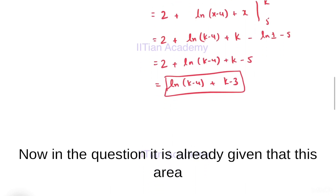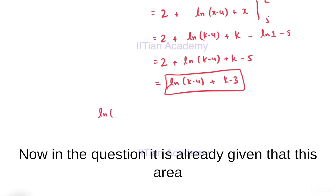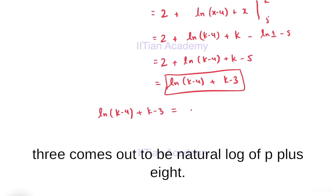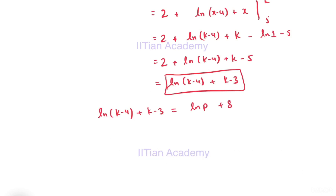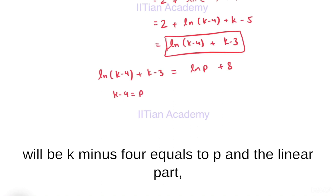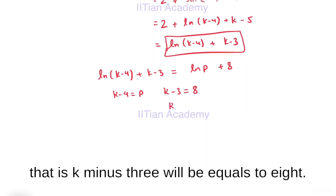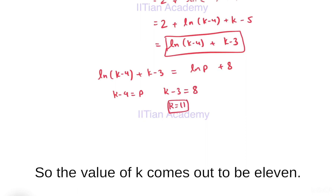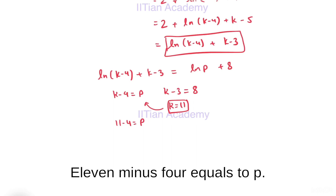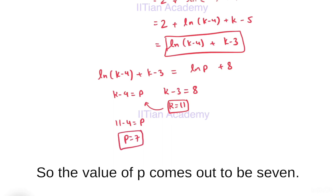In the question, it is already given that this area — ln(K-4) + K - 3 — equals ln(P) + 8. Comparing the argument of the natural log: K - 4 = P, and the linear part K - 3 = 8, so K = 11. Putting K = 11, we get 11 - 4 = P, so P = 7.